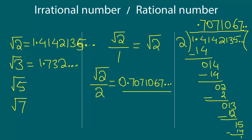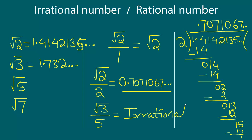Similarly, you can try to divide square root 3 by maybe 5, and what you will see is you are going to again get an irrational number — something which is non-terminating and non-repeating, just like before. So when we take an irrational number and divide it by a rational number, we always get an irrational number.